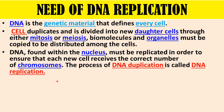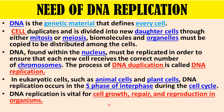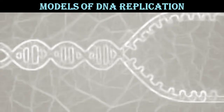This ensures that each cell receives the correct number of chromosomes. This process of DNA duplication is called DNA replication. In eukaryotic cells such as animal cells and plant cells, DNA replication occurs in the S phase of interphase during the cell cycle. DNA replication is vital for cell growth, repair, and reproduction.